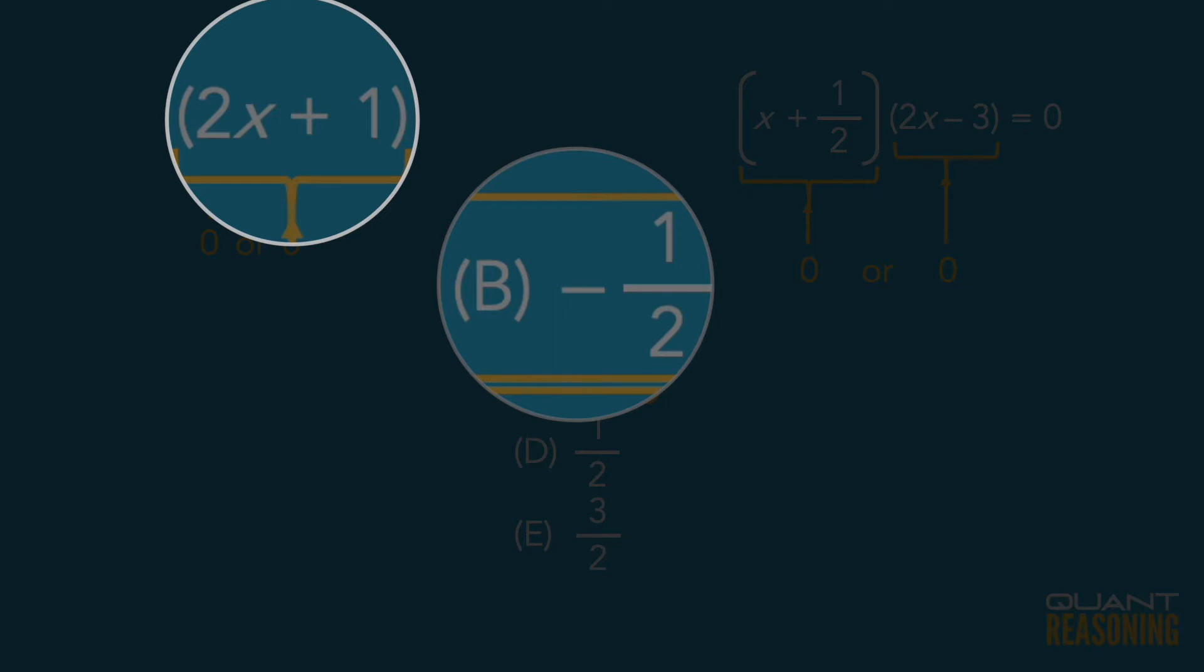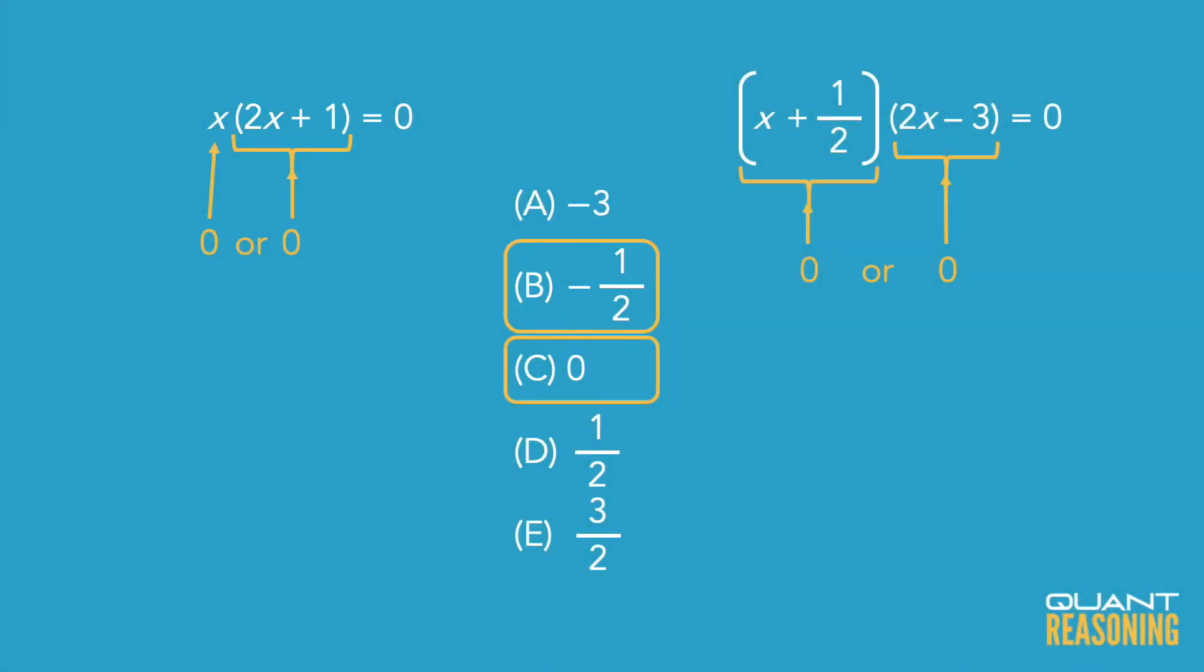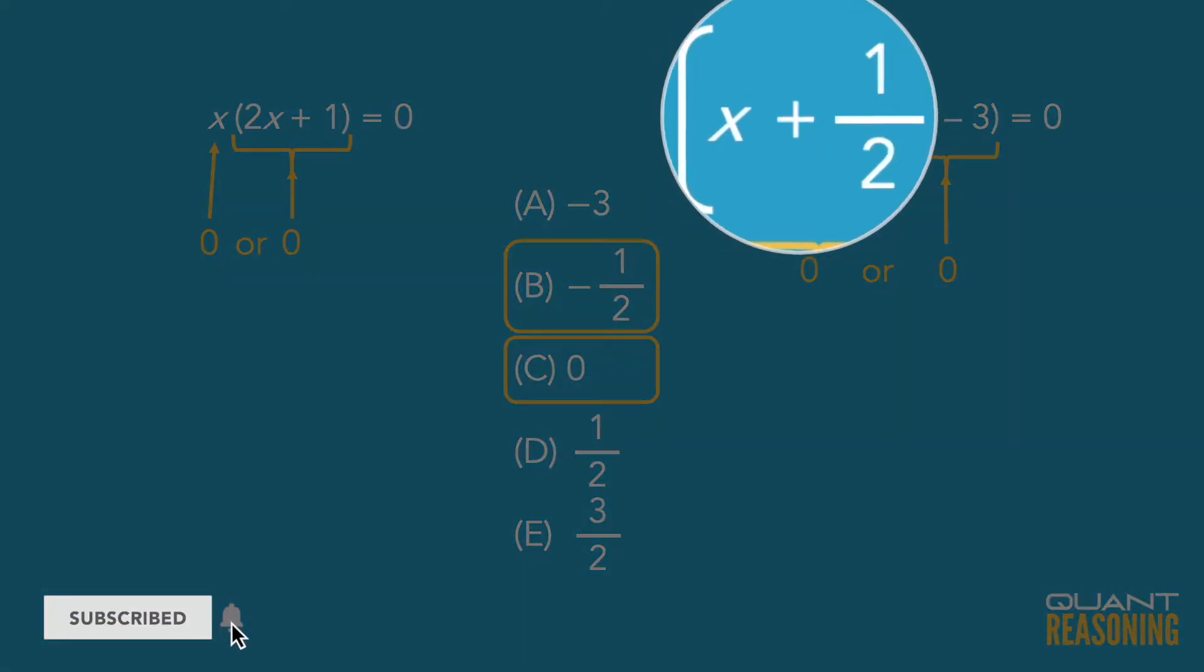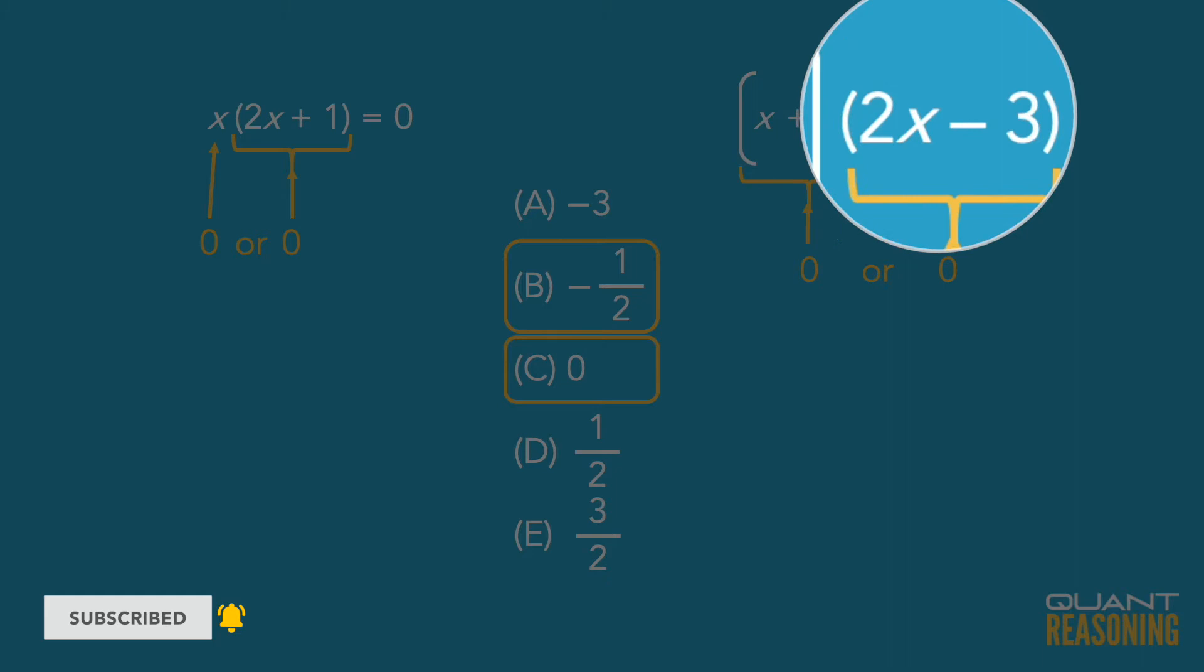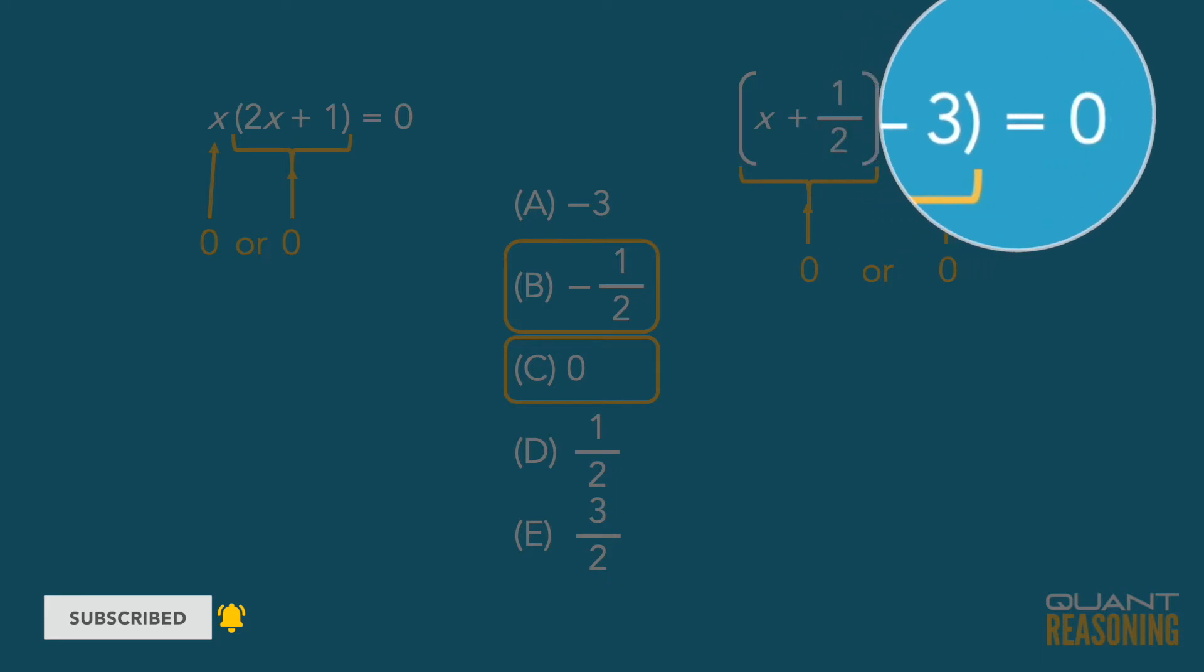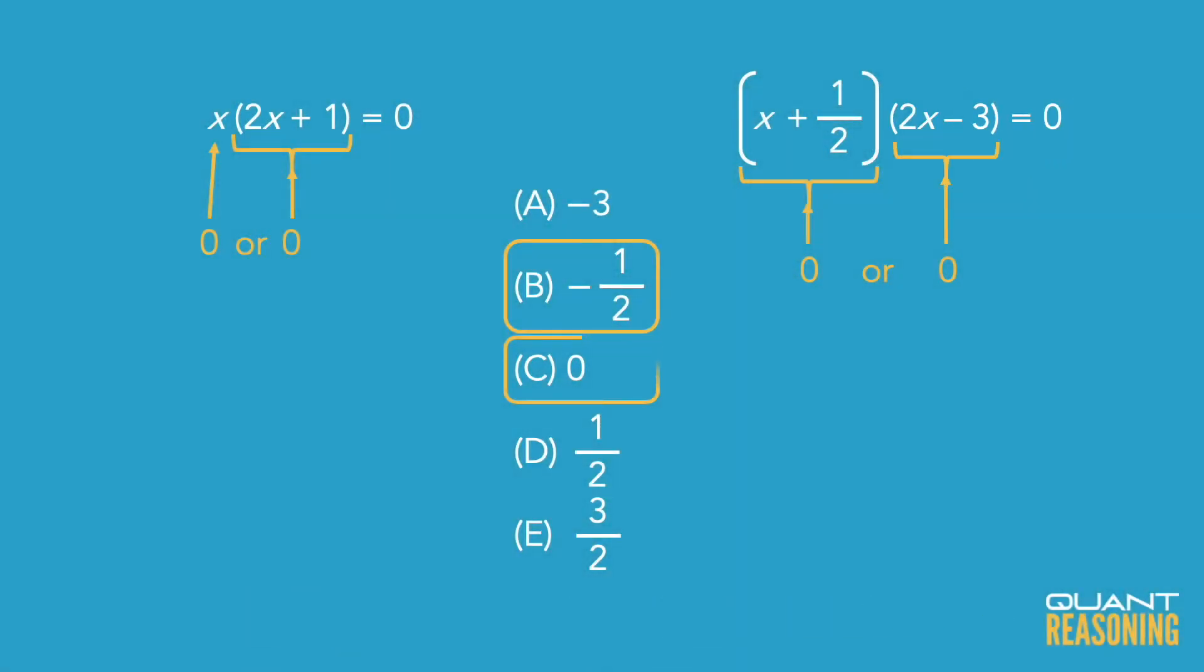However, when I look at the second equation, I see that actually x equals 0 wouldn't work. Because if x is 0, the second equation doesn't zero out. So that eliminates answer choice C, leaving us with just one answer choice, B. So that's the correct answer.